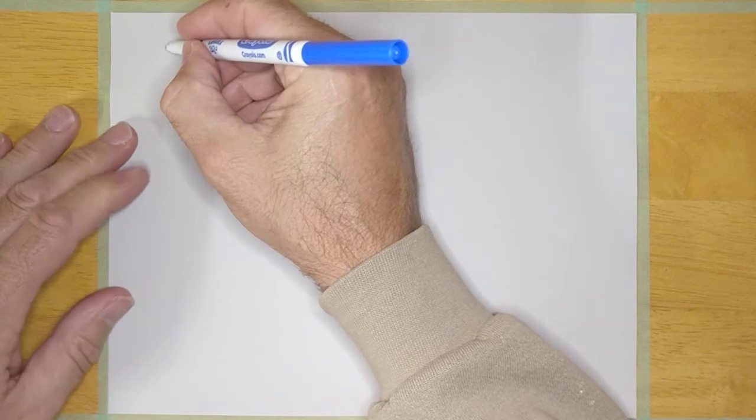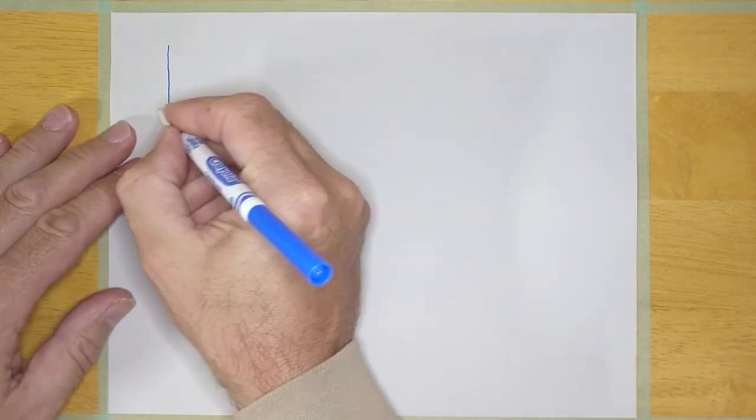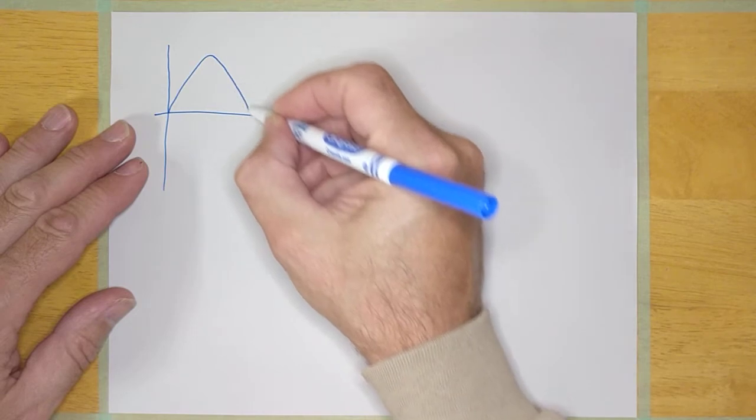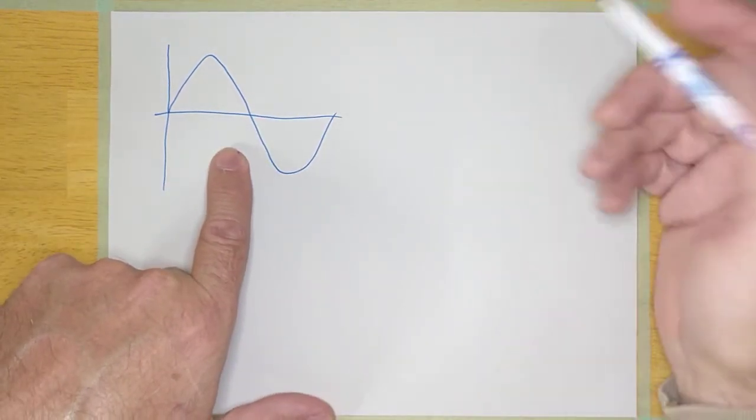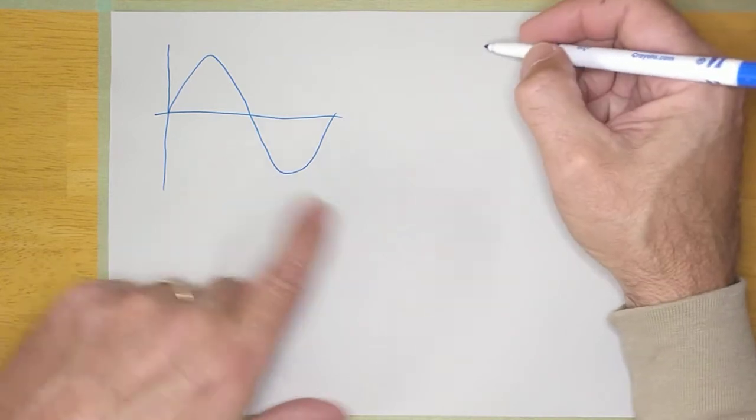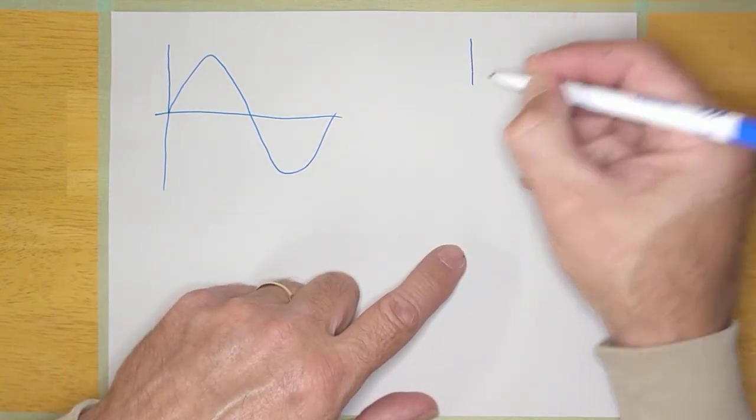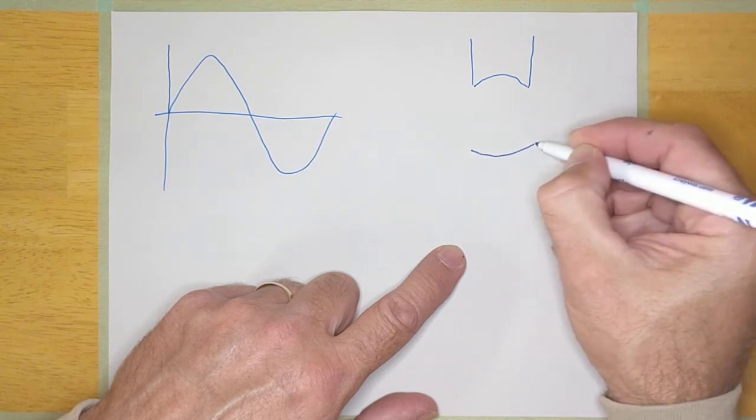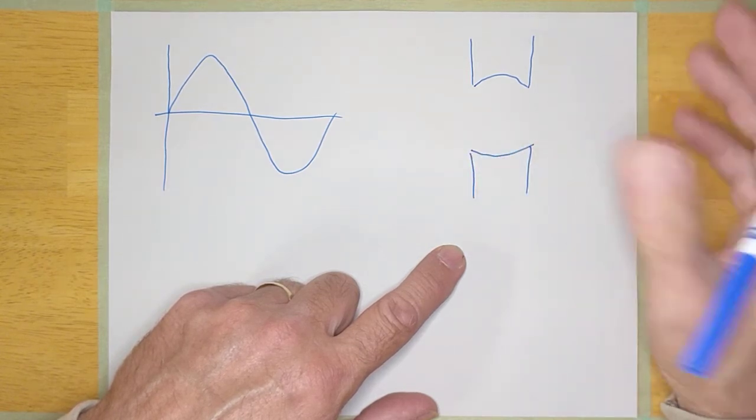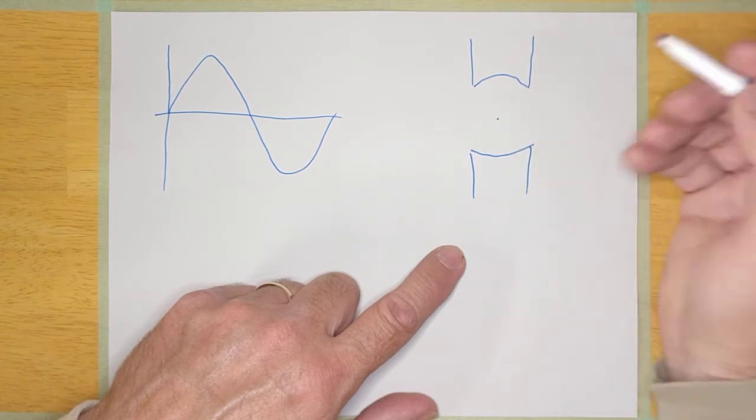Everybody knows that the AC sine wave looks like this. So I'm going to draw it really quickly here. That looks like that because of the way AC is generated. The easiest way to generate electricity is to rotate conductors through a magnetic field.